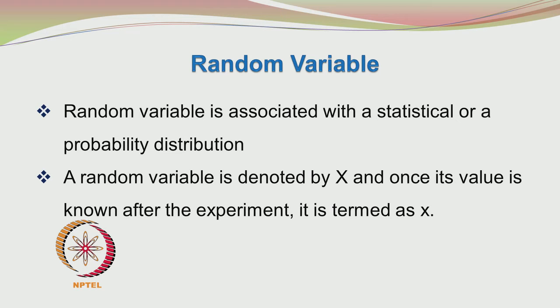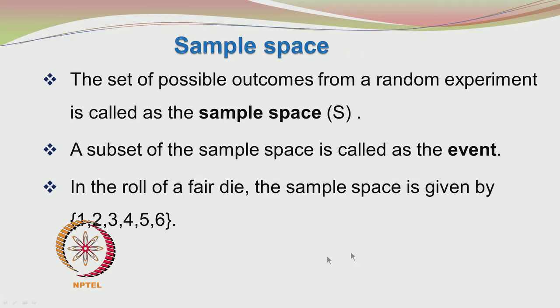How do we represent the random variable? The random variable is denoted by capital X. It is an abstract entity before you perform the experiment — just given a placeholder or name as X — and once the value is known after the experiment, it is given the terminology of small x. The small x is actually a value. Now we define sample space: it is the set of all possible outcomes from a random experiment, containing all possible outcomes from the random experiment.